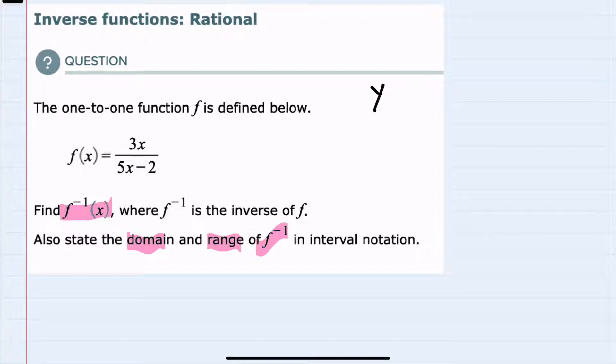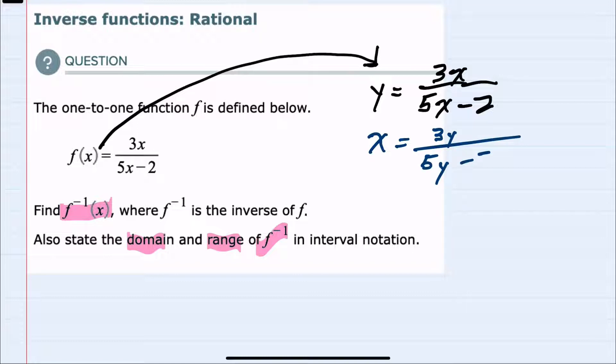So to start, I'll recall that our function f of x is the output, or y value, and so our function f of x I'm writing as y equals. And from here, to find the inverse function, I will switch the x's and y's, so this will be x equals 3y over 5y minus 2, and then solve for this new y.